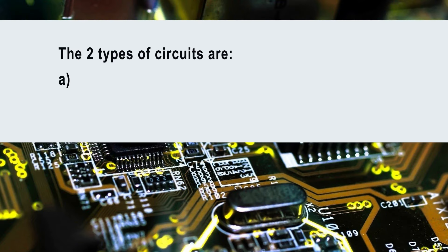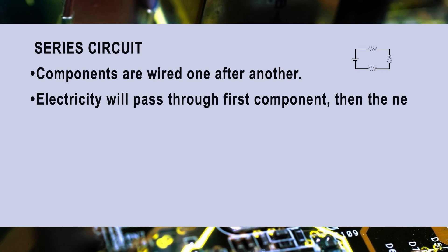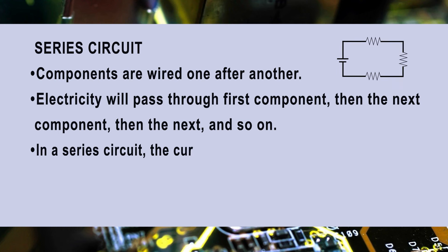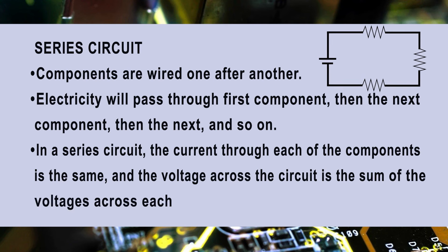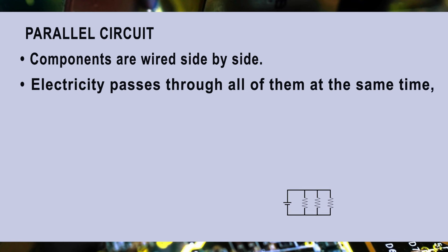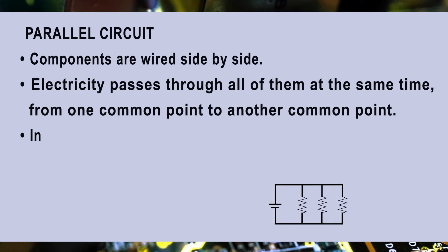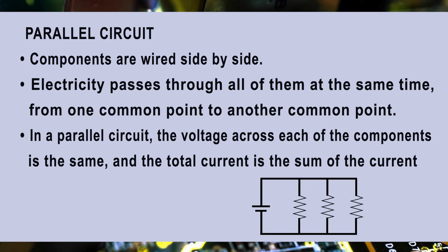The two types of circuits are series circuits and parallel circuits. In a series circuit, components are wired one after another; electricity passes through the first component, then the next, and so on. The current through each component is the same, and the voltage across the circuit is the sum of voltages across each component. In a parallel circuit, components are wired side by side; electricity passes through all of them at the same time from one common point to another. The voltage across each component is the same, and the total current is the sum of the currents through each component.